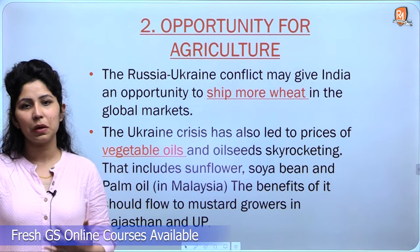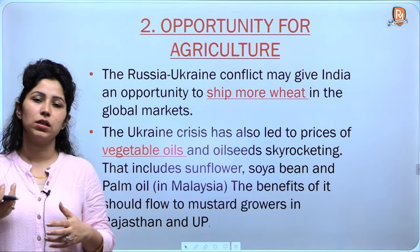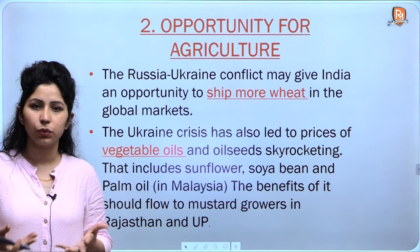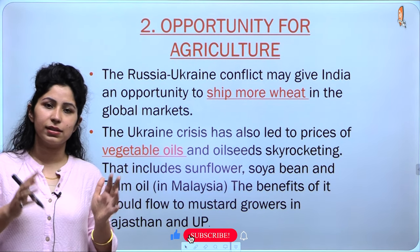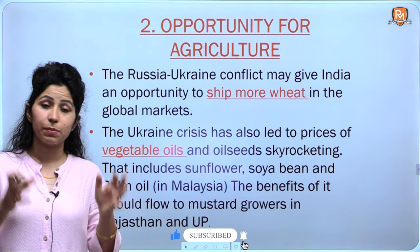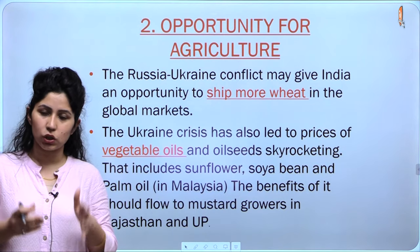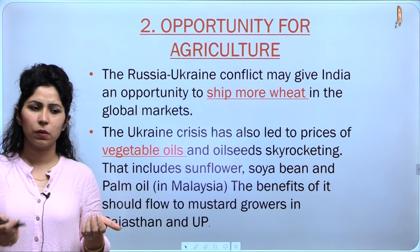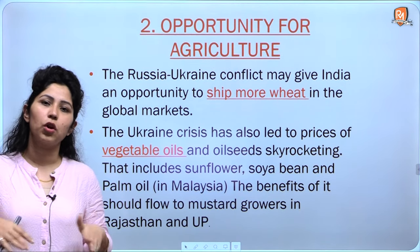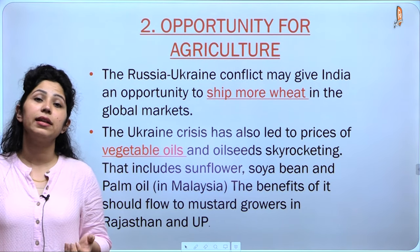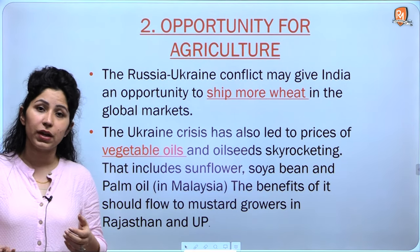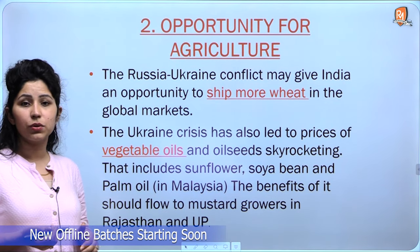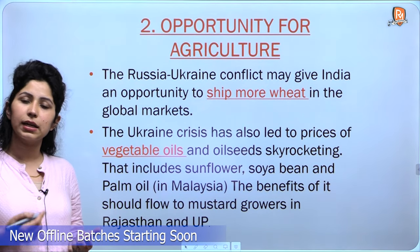The next point, much discussed in newspaper columns, is the opportunity that comes for Indian agriculture. Russia and Ukraine export a lot of wheat to the world. Since sanctions have been imposed and ships have been stalled at the Black Sea with no trade happening, India holds a potential benefit to export wheat at higher prices. News is coming in of wheat being exported from ports like Kandla at prices higher than MSP, with the export competitiveness of Indian wheat rising. The Russia-Ukraine conflict may give India an opportunity to ship more wheat to global markets.